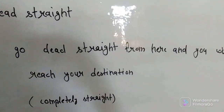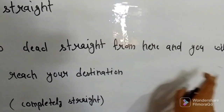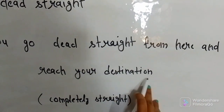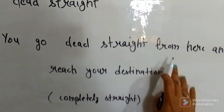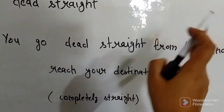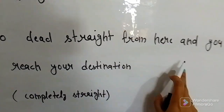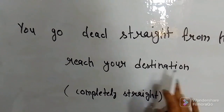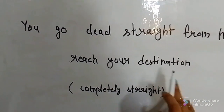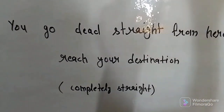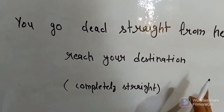The next is 'dead straight.' For example: 'You go dead straight from here and you will reach your destination.' That means you go completely straight — exactly straight — from here. You don't need to go here and there; just go dead straight and you will reach where you want to go.